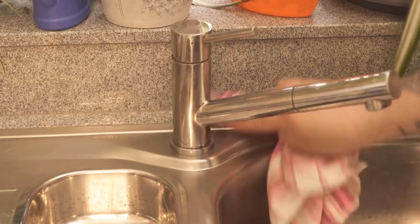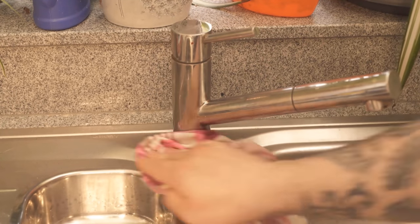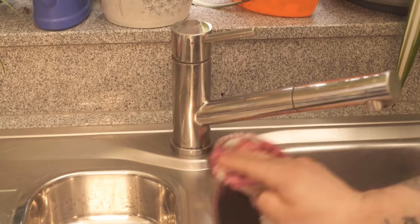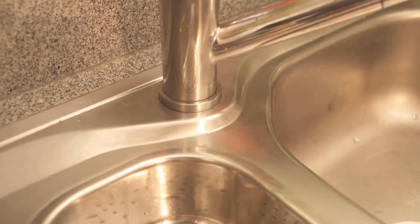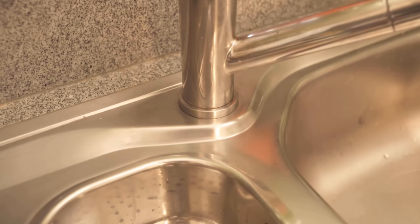I now go once with the sponge over it. I don't scrub strongly, but only a little and get really everything completely away. After that the faucet shines like new again.